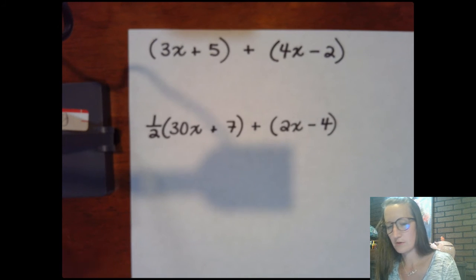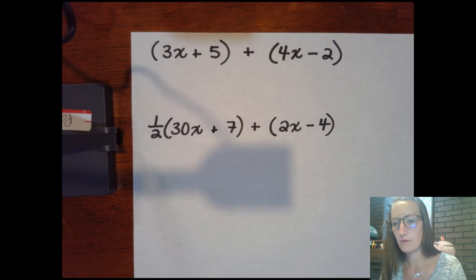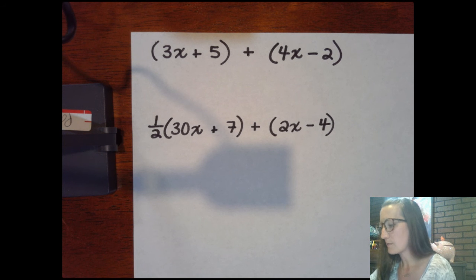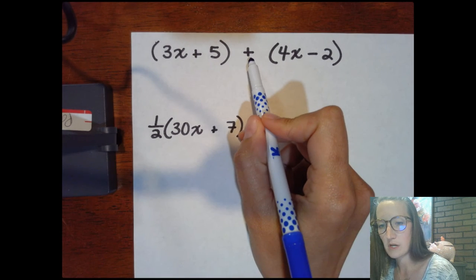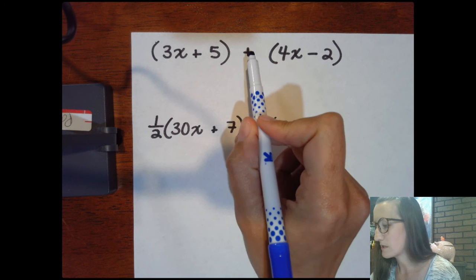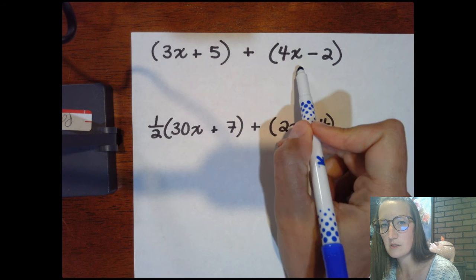You'll get some additional tutorials and notes within the Google form. But when you see a basic addition problem like this, 3x plus 5, that's our first expression, the first addend, plus the expression 4x minus 2.